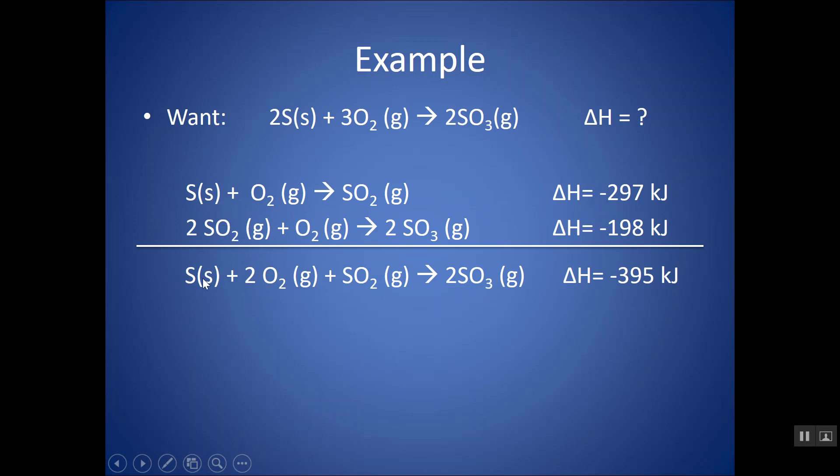So, this first one, we said we want to multiply by 2. I just want to show you right now, as they are, without multiplying that first one by 2, they do not add up to this overall reaction. I would get 2S solids, 1SO2 because one of them would cancel here, 2O2s and a 2SO3. It does not add up to my target. But, if I take that first reaction, multiply, notice I'm multiplying the entire thing by 2, including the delta H.